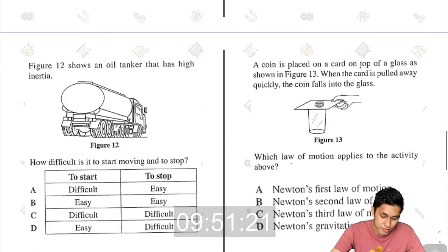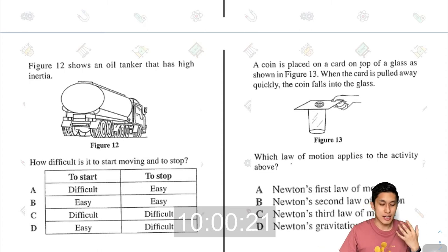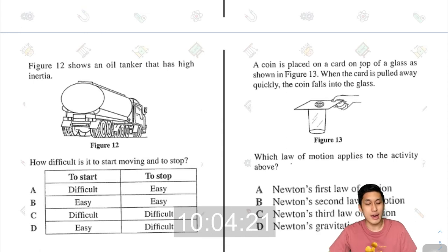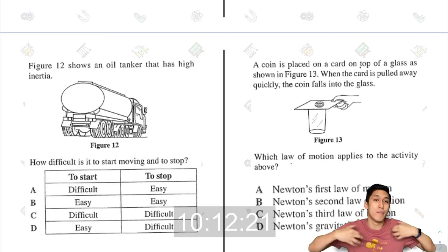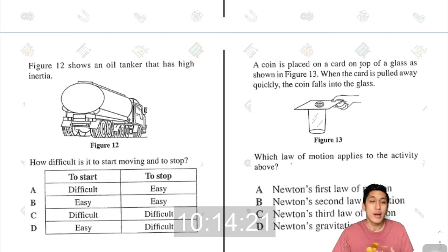The next one, figure 12 shows an oil tanker that has high inertia. How difficult is it to start moving and to stop? When you have high inertia, it doesn't only mean that it is very hard for you to stop. High inertia means that if you are stationary, you want to remain stationary very badly. And if you are moving, you want to remain moving at a constant velocity. So it's both hard to stop and hard to start. Difficult and difficult, that is the answer, C.